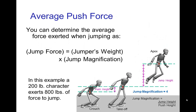The average amount of force that you exert on the ground — if you want to determine that — it's found from the jump magnification. Just to remind you, the jump magnification is the ratio of how high you jump to how far you push from crouch to takeoff. So in this example, the jump magnification is four. We jump four times higher than we push.